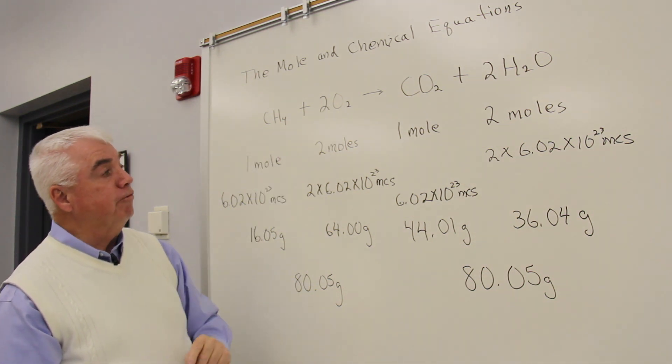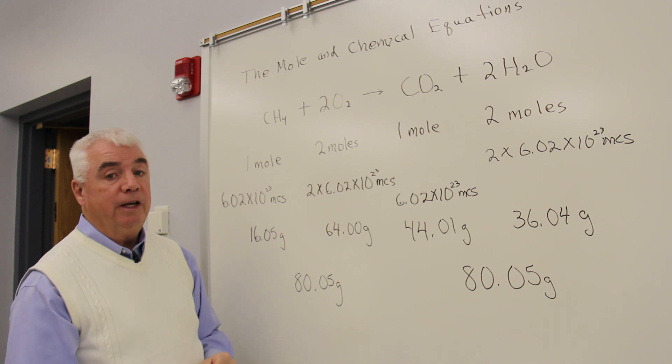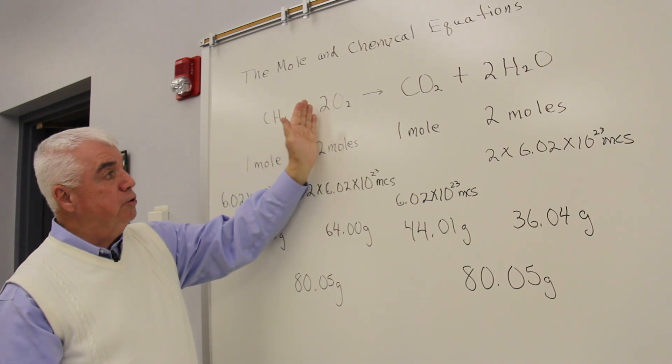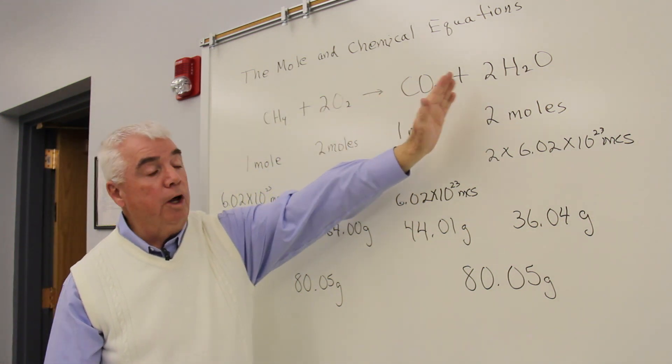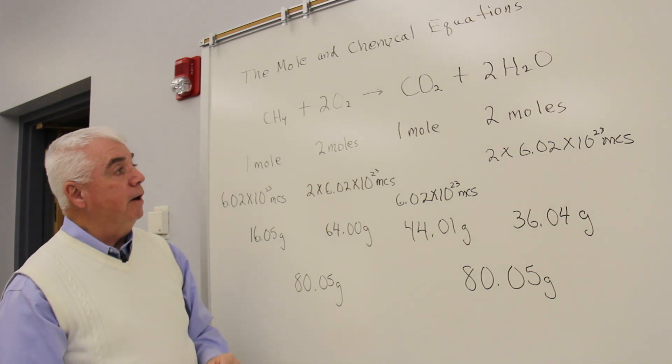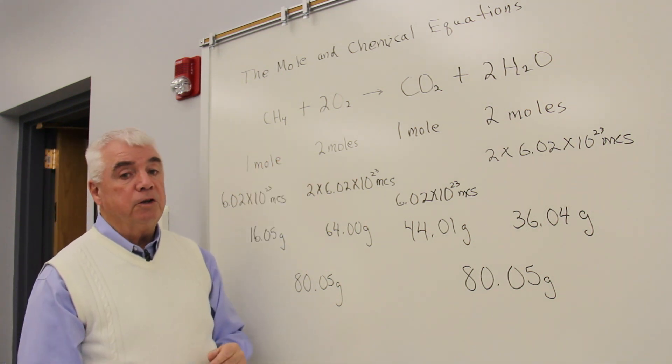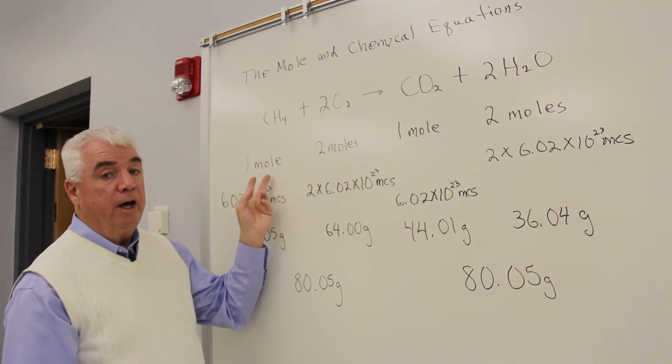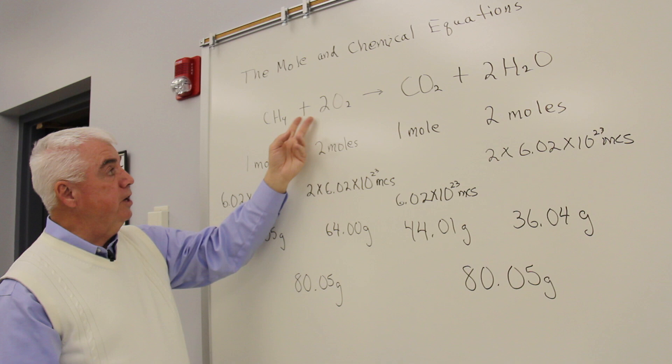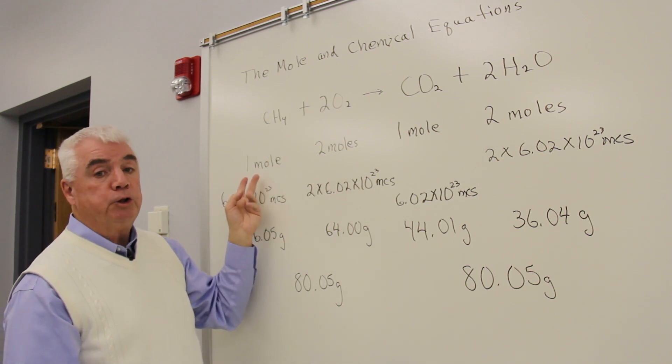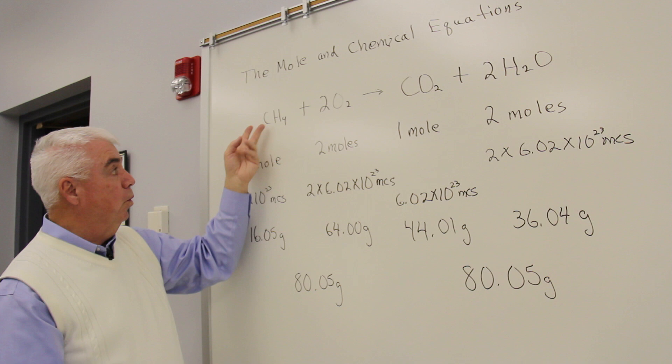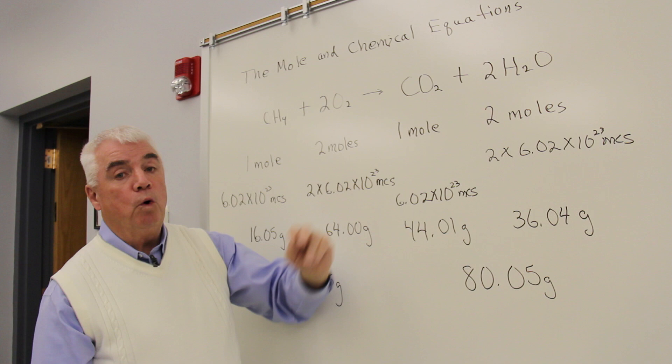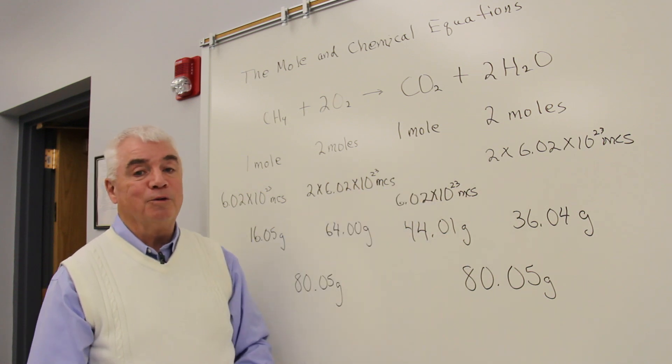The numbers out in front, the coefficients, indicate the number of molecules that are reacting. So one molecule, two molecules produce one and two over there. But in a practical scale, it's a lot more useful to use the mole concept. We use those same coefficients now and interpret the equation in terms of moles. One mole of methane requires two moles of oxygen to give one mole of CO2 and two moles of water.